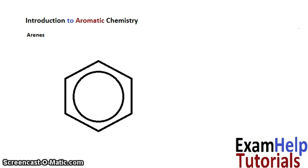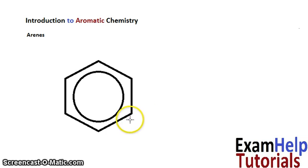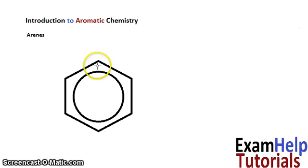I'll show you what a benzene ring actually looks like. This is a quick drawn skeletal formula for benzene. You can see here it's a cyclical structure. The original structure that was thought was that there would be alternating double bonds: double bond, single bond, double bond, single bond, double bond, single bond.